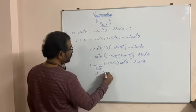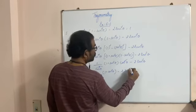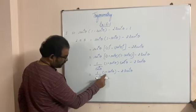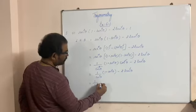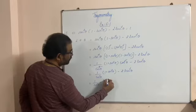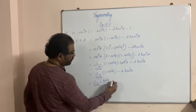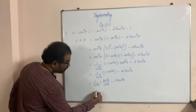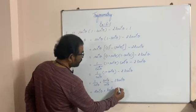So we get 1/cos²θ into (1 + sin²θ) into 1/cos²θ, which gives us sin²θ/cos²θ plus 1/cos²θ, and sin²θ/cos²θ is tan²θ, minus 2tan²θ.